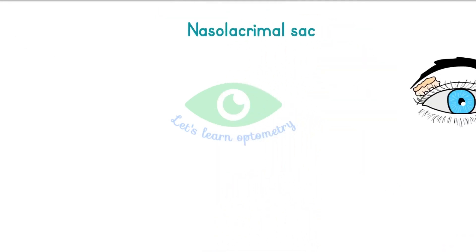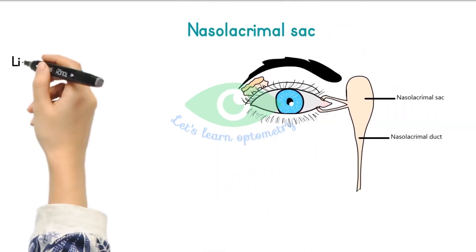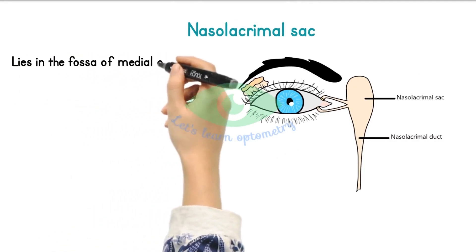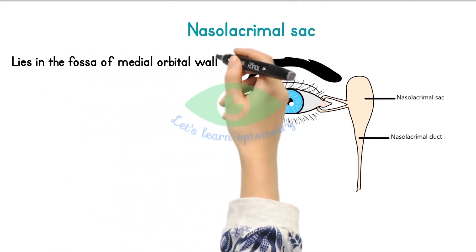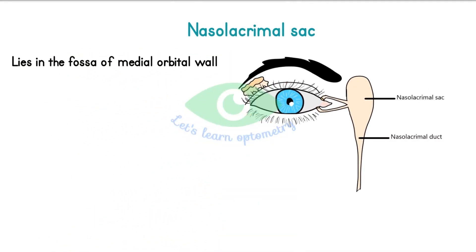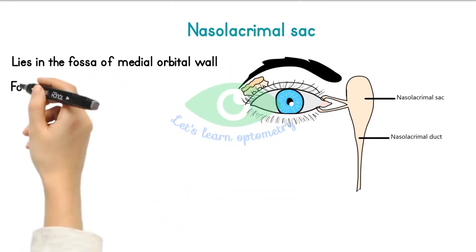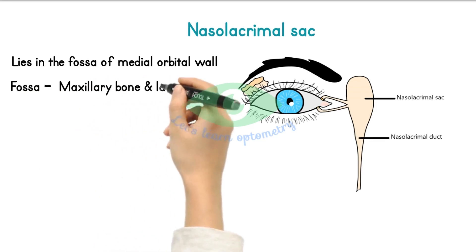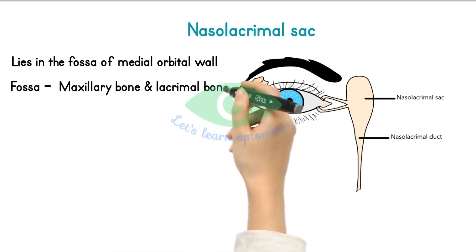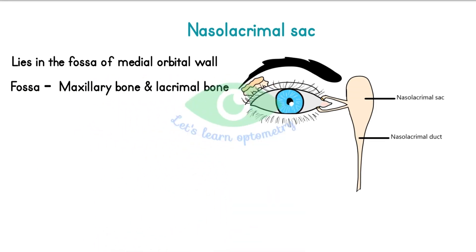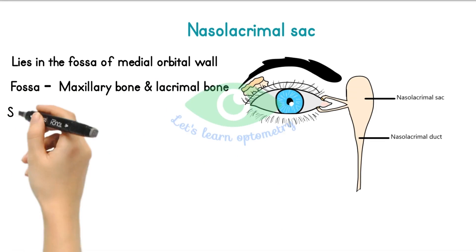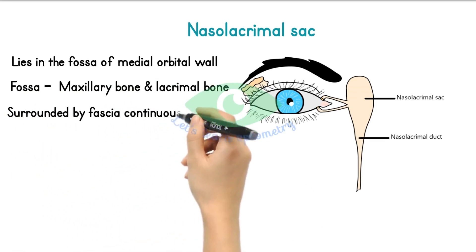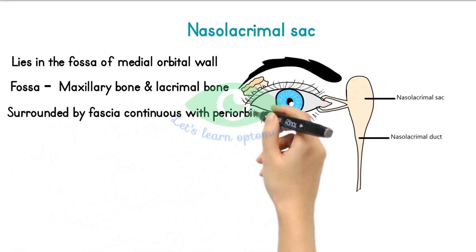The nasolacrimal sac lies within a fossa in the anterior portion of the medial orbital wall. This fossa is formed by the frontal process of the maxillary bone and the lacrimal bone. The sac is surrounded by fascia, continuous with the periorbita.